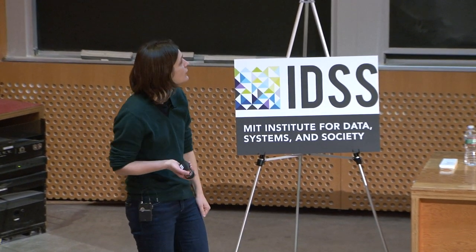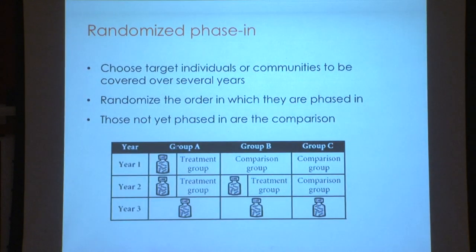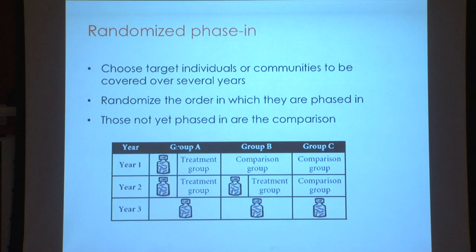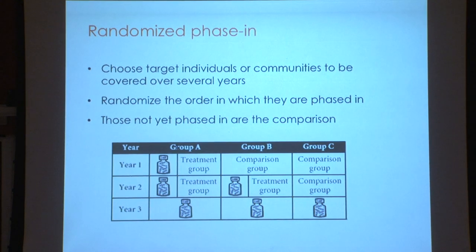Another method is randomizing the phasing of a program. Instead of giving a program to all 200 preschools at once, you do 200 first and then, if it's not a disaster, scale up to the next 100. This was common at the beginning of RCTs because it seemed the most feasible. However, it's not an ideal design—people not yet treated anticipate future treatment, which can change their behavior, so you don't exactly know what you're measuring.